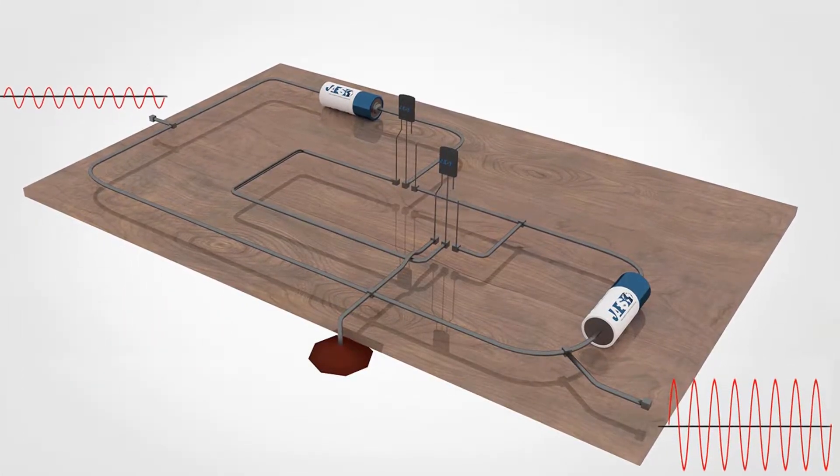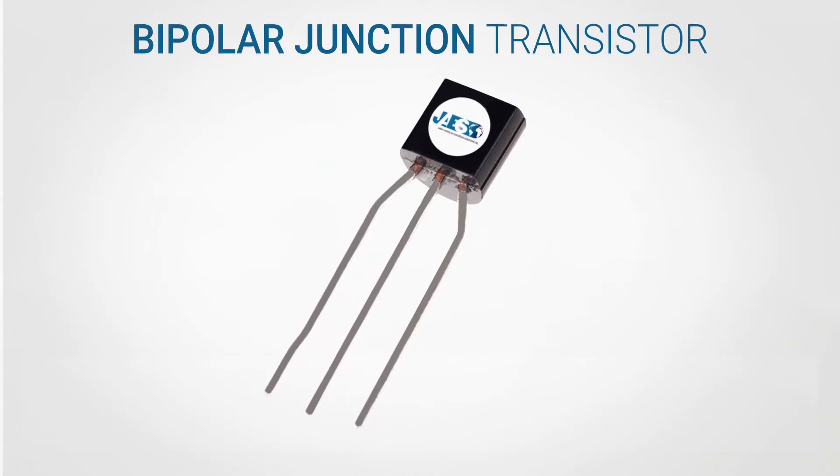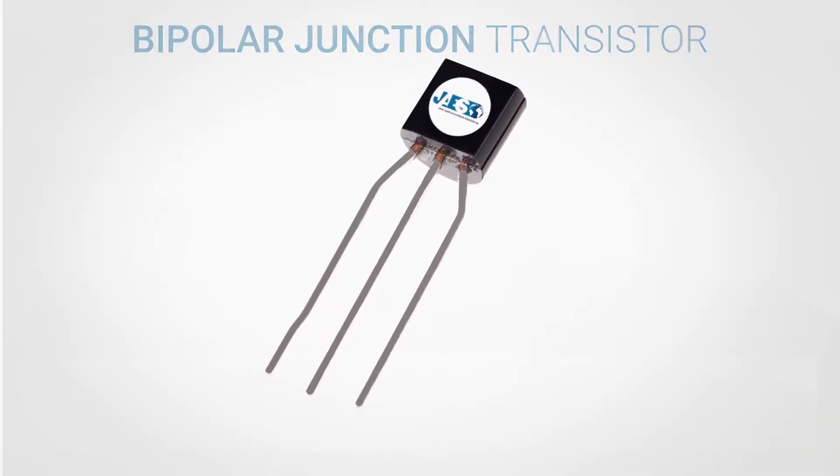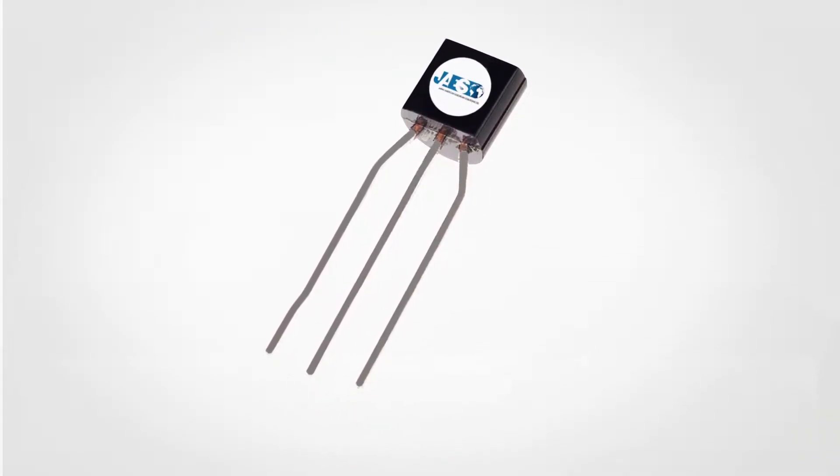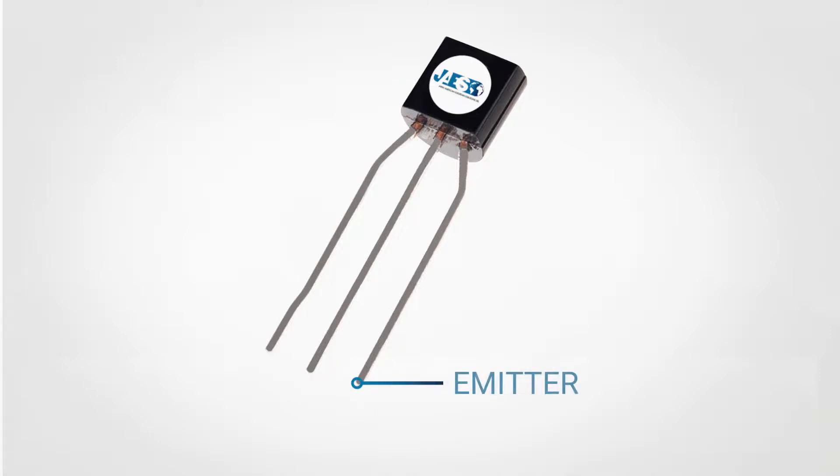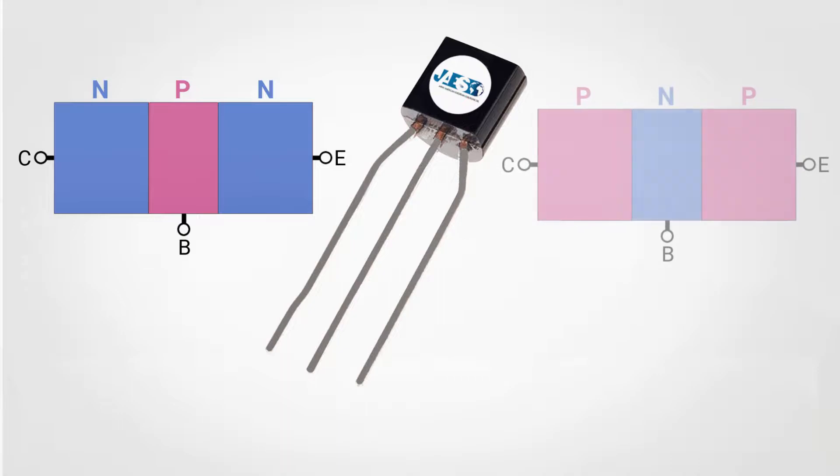In this video we will focus on the bipolar junction transistor and on its applications which as you can see has three terminals, namely the emitter, the collector, and the base. There are two types of bipolar transistors: NPNs and PNPs.